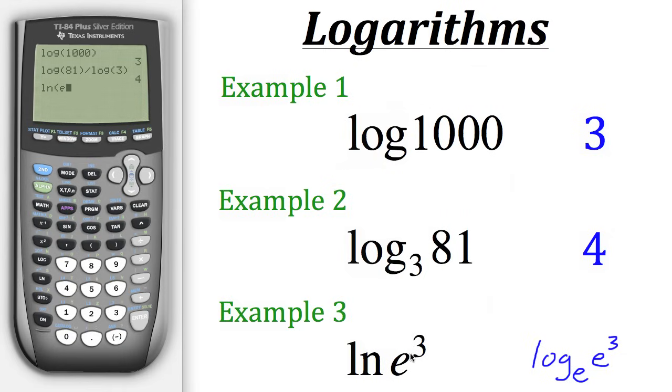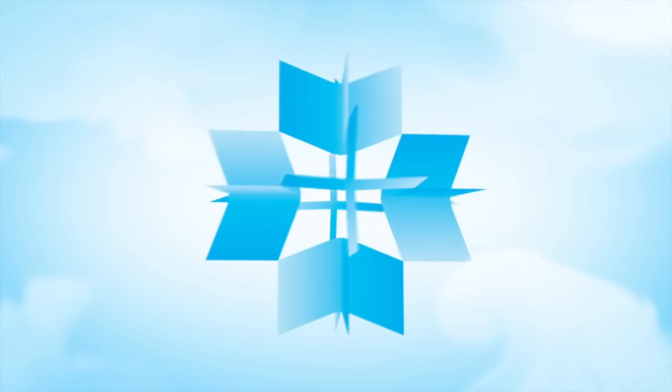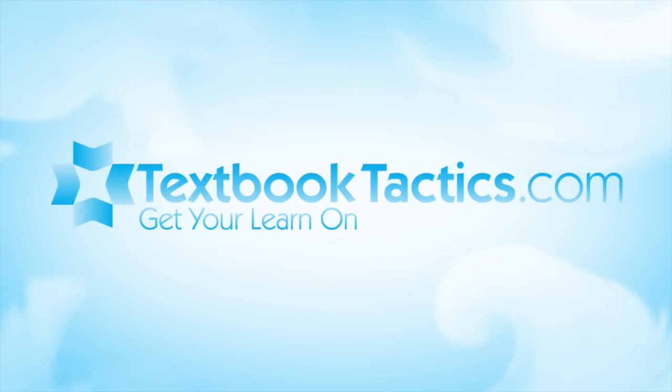Now it still needs to be raised to the third power. So we'll raise it to the third power and then close the parentheses. So now we have the natural log of e cubed. And then to get the result, we'll hit enter. And that gives us a result of three. And that sums up how you would use logarithms on a calculator. So now let's get started.